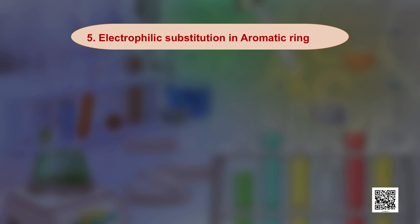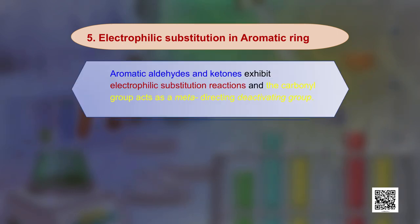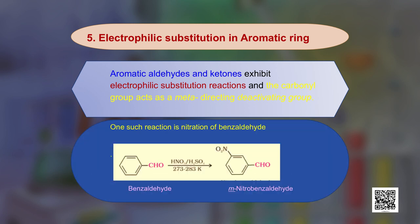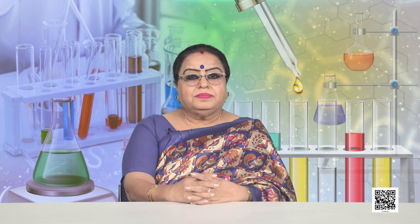Aromatic aldehydes and ketones also undergo electrophilic substitution reactions on the benzene ring, just like other aromatic compounds. The carbonyl group acts as a meta-directing, deactivating group. For example, with benzaldehyde, the meta-directing CHO group directs the incoming nitro group to give meta-nitrobenzaldehyde as the product.